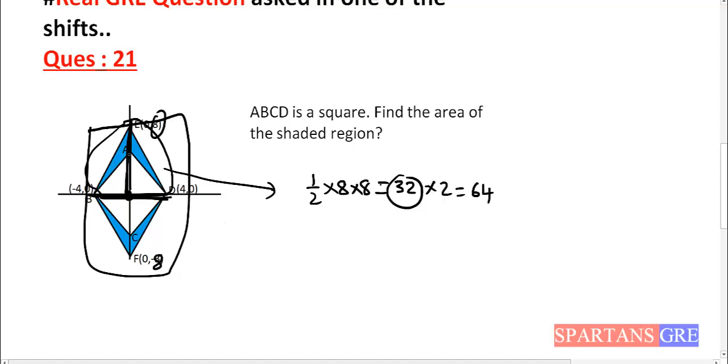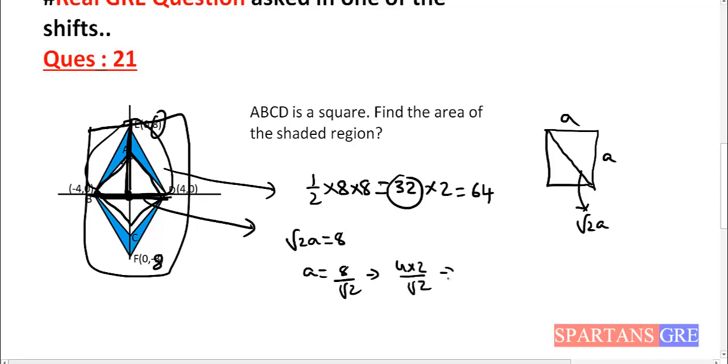Now if you subtract this area of the smaller square from this area of the quadrilateral, you will get the shaded area. So you know in a square, if you take a square, if sides are A, then this diagonal will be root 2A. And here you know this diagonal length, this diagonal length is 8. So that root 2A value is given as 8. So A will be 8 by root 2. Which is 4 into 2 by root 2. That will be 4 root 2.